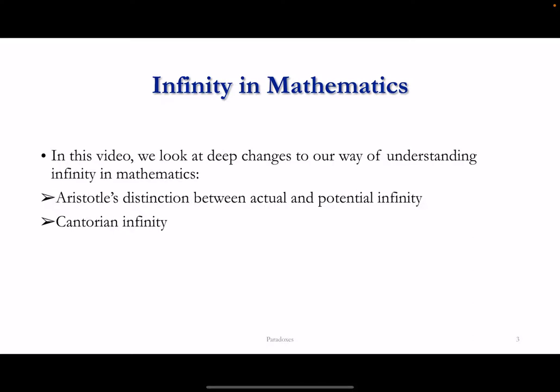In this video, we look at profound changes that took place over the centuries in our understanding of infinity. We start by looking at Aristotle's distinction between potential and actual infinity, and then look at the changes which took place especially around the 19th century, and in particular Cantorian infinity.